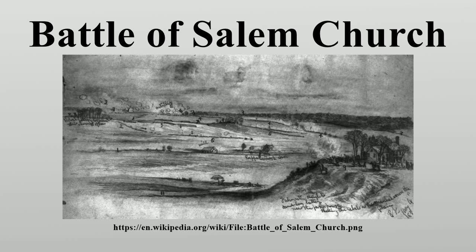At first Sedgwick believed that he faced a single brigade of infantry, so about 3:30 p.m., he attacked the Confederate positions with only W.T.H. Brooks's division. Brooks succeeded in driving back McLaws's right flank, but a counterattack stopped the Union attack and forced Brooks to retreat back to his original position. Sunset ended the combat before any further units were involved.